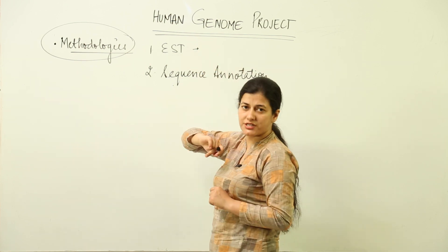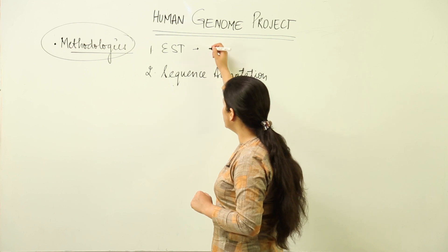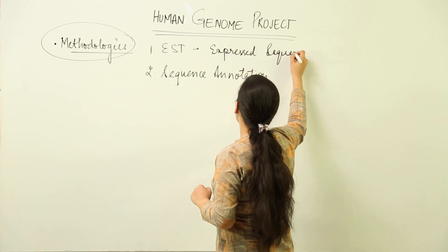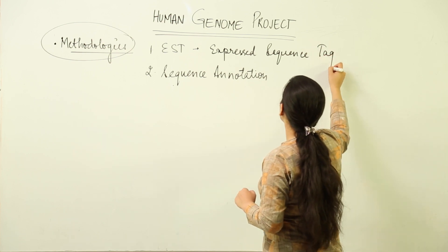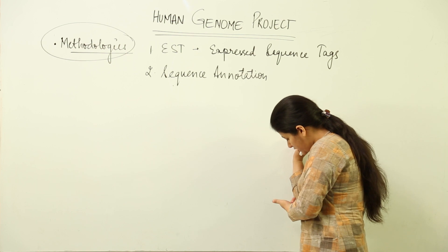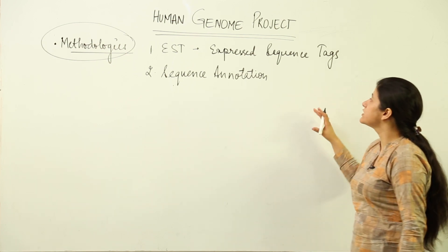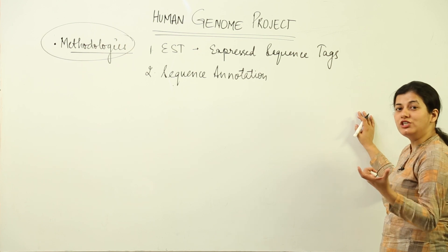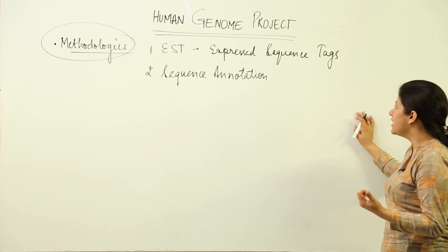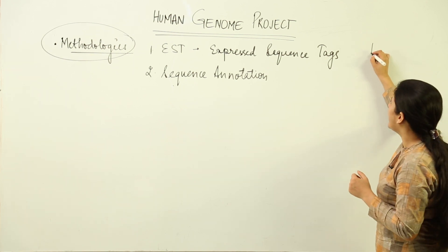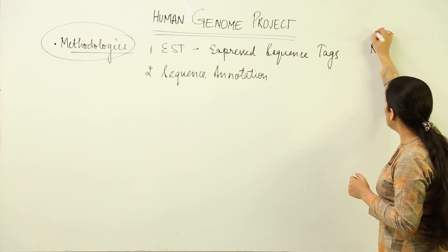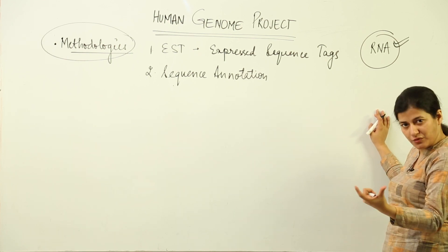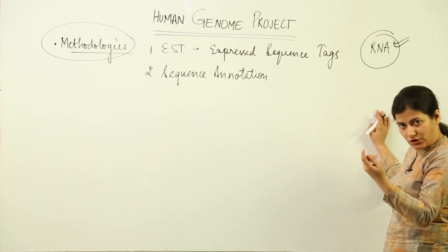The first methodology is EST — Expressed Sequence Tags. The genome has certain sequences which are expressed; that means the genes, the expressed part of the genome, are sequenced using RNA. Whatever part of the genome is making RNA, using that RNA we can decipher what the genetic composition — the DNA nucleotide sequences — for that part would be.